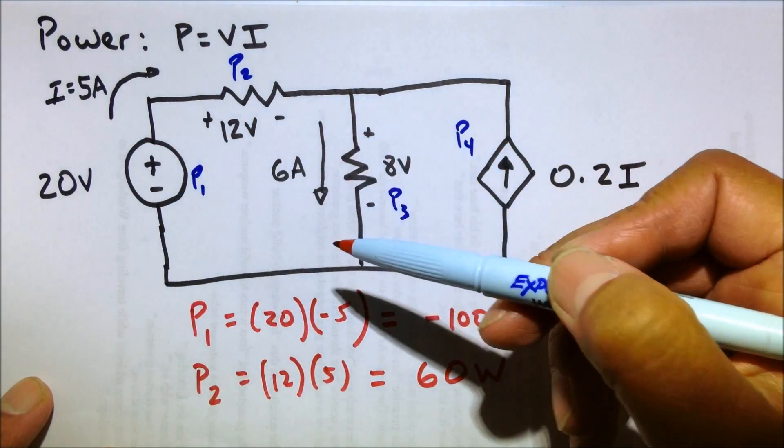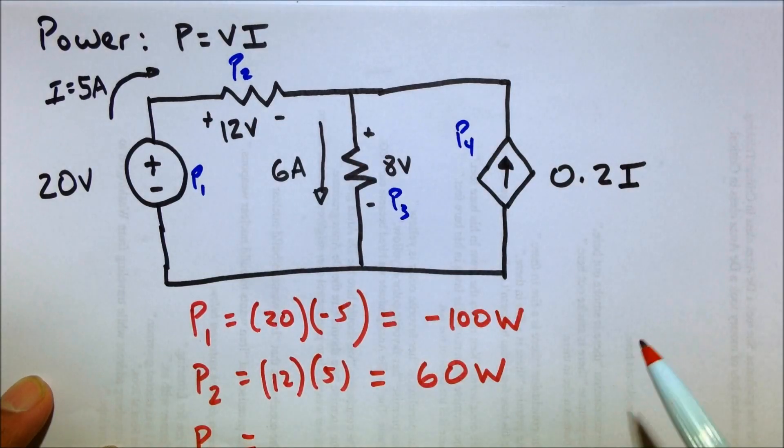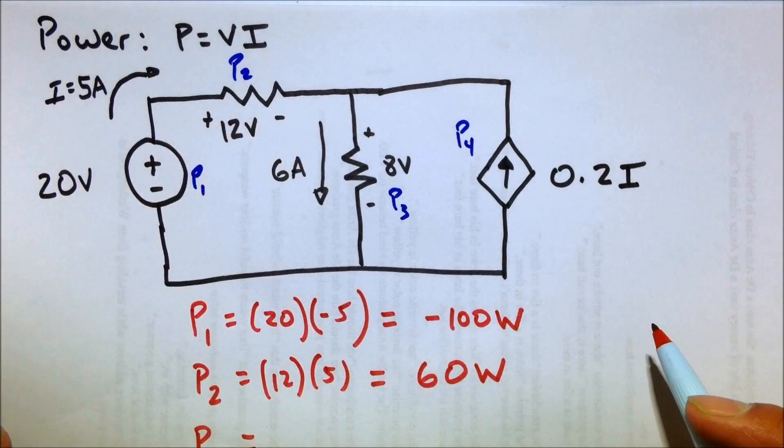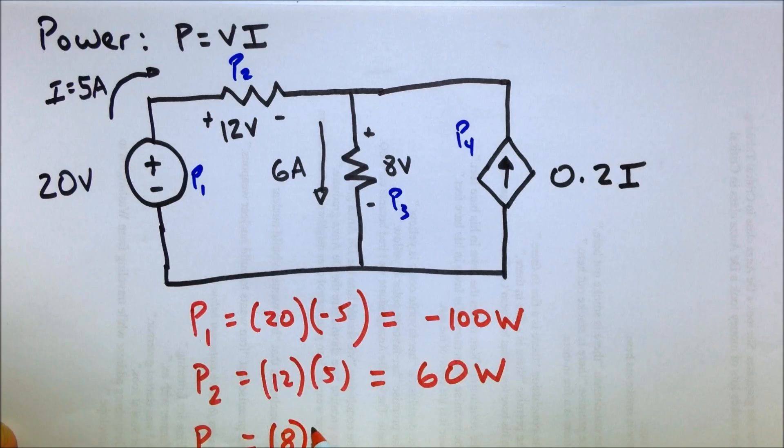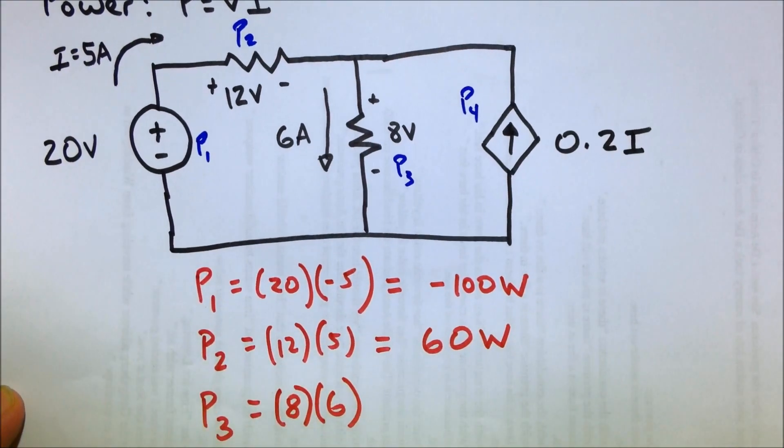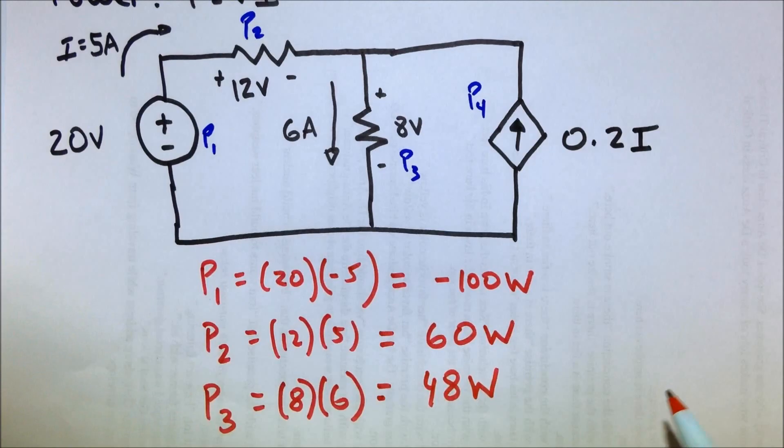Down through here, P3, we know 6 amps flows this way. And we know that there's an 8-volt drop across it. So that is 48 watts absorbed or consumed by that resistor.